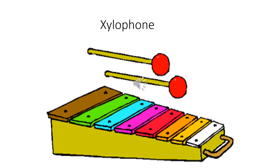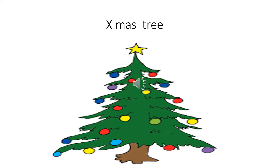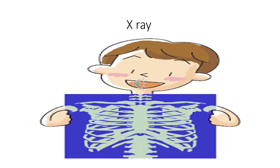So children, the fourth picture is of xylophone — X for xylophone, X for X mystery, X for X ray. I repeat, X for X ray.